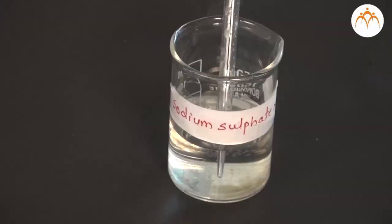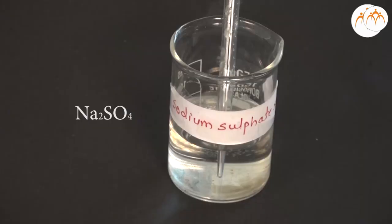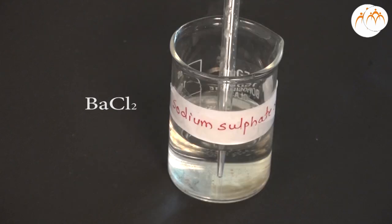Double displacement reaction: Let us see the reaction between sodium sulphate and barium chloride. Requirements for the experiment are sodium sulphate, barium chloride, and test tube. The colour and appearance of both sodium sulphate Na2SO4 and barium chloride BaCl2 are clear and transparent.